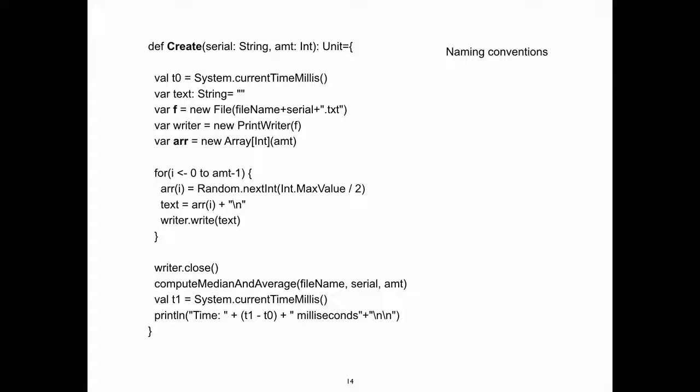Here we're just saying it's a file writer array. The name 'create' doesn't tell us what we're going to create. We're basically going to open a file and put a bunch of numbers in it, and the name 'create' doesn't tell us that. The name doesn't tell us what we're going to do, so the only way to know what we're creating is to look inside the function and see what it's doing.